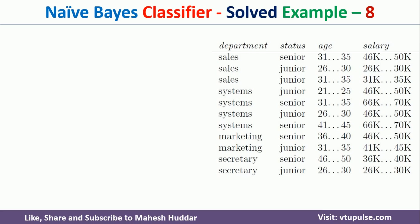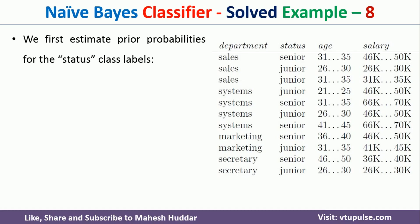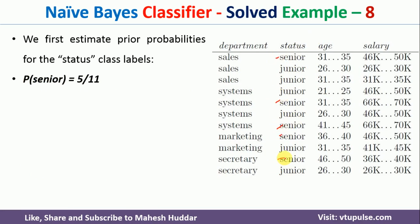The very first thing we do in Naive Bayes classifier is calculate something called the prior probabilities — the prior probability of the target column, which is status. Status has two possibilities: senior and junior. Totally 11 examples are there; 5 are seniors and 6 are junior. So probability of senior is 5/11, and probability of junior is 6/11.